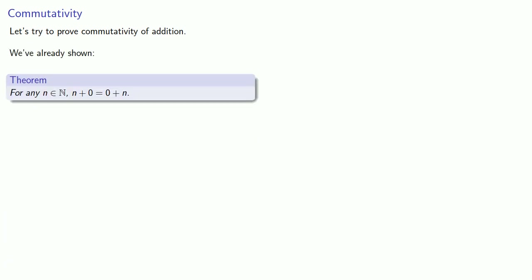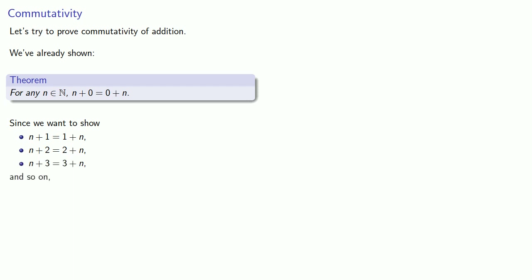Let's try to prove the commutativity of addition. We've already shown that zero commutes — for any natural number n, n plus zero is equal to zero plus n. To prove commutativity in general, we want to show that n plus one equals one plus n, n plus two equals two plus n, n plus three equals three plus n, and so on. So it seems we want an induction proof.